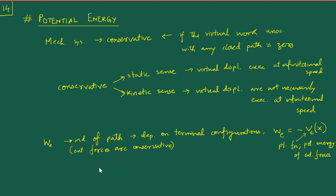So the concept of potential energy emerges in a clean fashion when we set up our definitions this way. We consider the mechanical system to be conservative, we focus on the external forces being conservative, the virtual work is independent of path and dependent on terminal configurations — which connects directly to the work function. Because the work function depends only on the terminal configurations, we have this equivalent representation as a point function, which is nothing but the potential energy of the external forces.